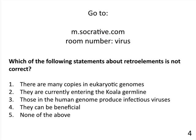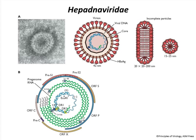The question asks which statement about retroelements is not correct. Number three is the answer — 'those in the human genome produce infectious virus.' We don't make any infectious retrovirus from our endogenous retroviruses. You can rescue it by manipulating DNA in the lab, but as far as we know, we don't make any infectious retroviruses. The other statements are true: there are many copies in eukaryotic genomes, they are currently entering the koala germline, and they can be beneficial — as the syncytin story shows.